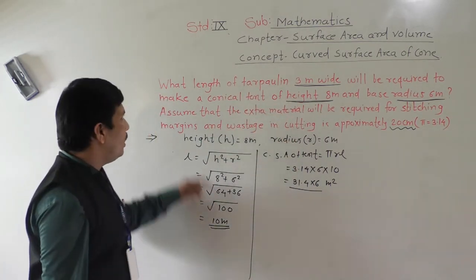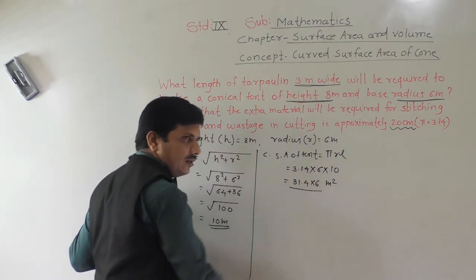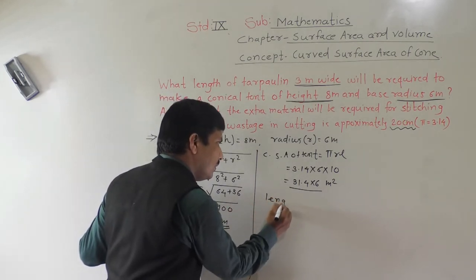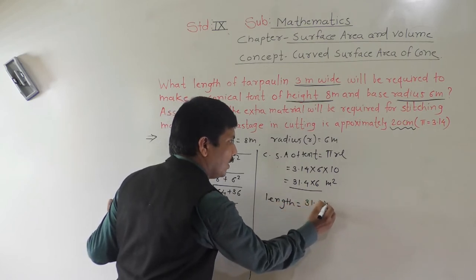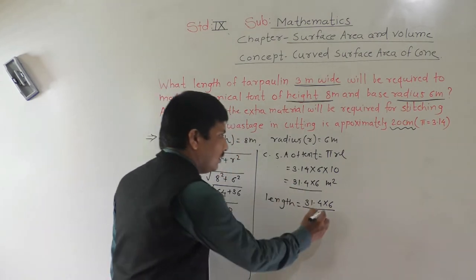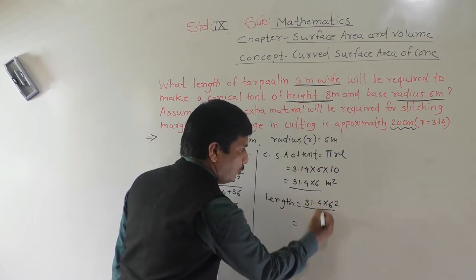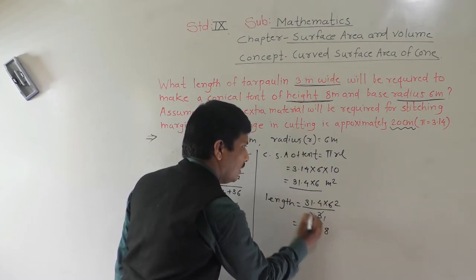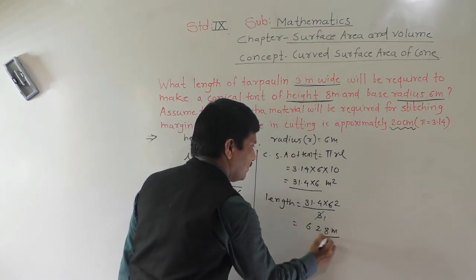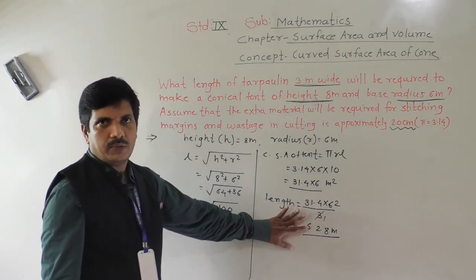We know that length × width = curved surface area. So directly we can use: length = (31.4 × 6) ÷ 3. Here 3 goes into 6 twice, so 31.4 × 2 = 62.8 meters. This is the length of the tarpaulin.